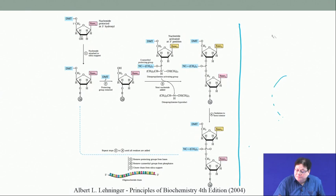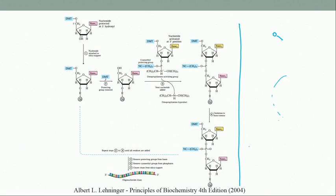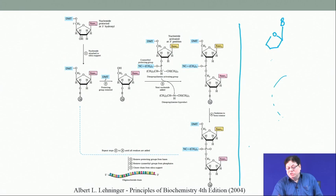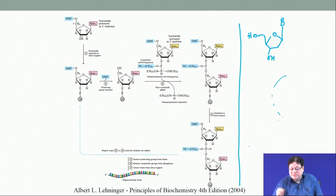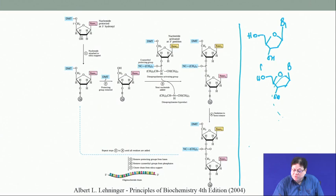Let us first write the structure of a mononucleotide and analyze what the possible problems are and how to solve them. We are talking about deoxy oligonucleotides — the synthesis of DNA, not RNA. The general structure of a nucleoside is as shown, and we want to couple this with another nucleoside via a phosphate linkage between the 3-prime and 5-prime OH groups.